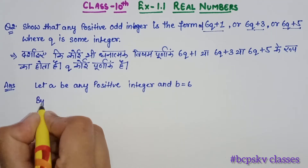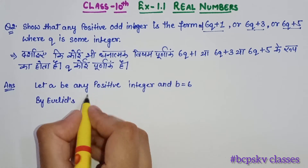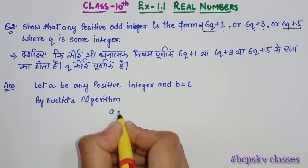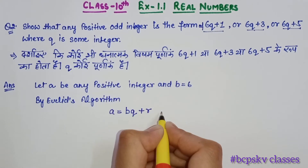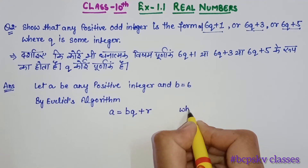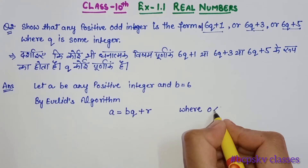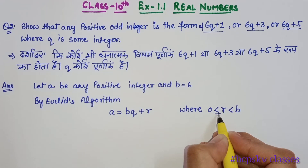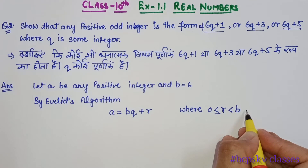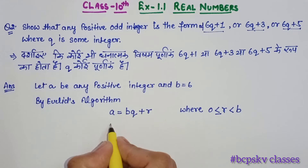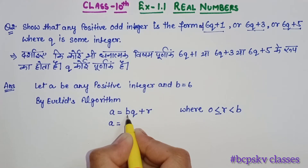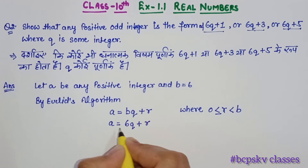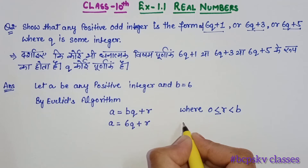Next, by Euclid's division algorithm, we know a equals bq plus r. So we have a equal to 6q plus r, where the remainder r satisfies 0 less than or equal to r less than b, meaning r is always less than 6. We will write a equal to 6q plus r and substitute different values of r.